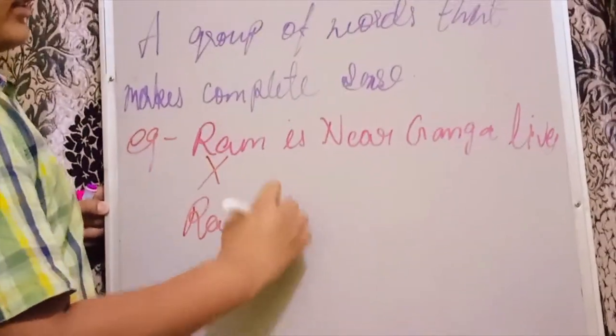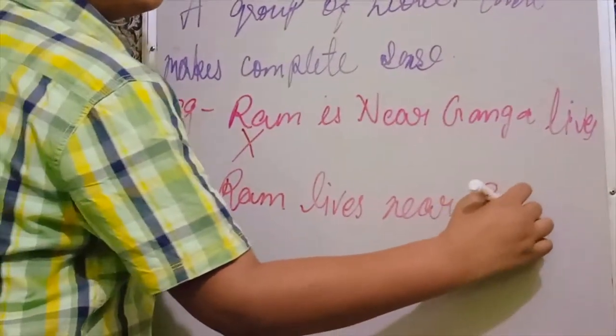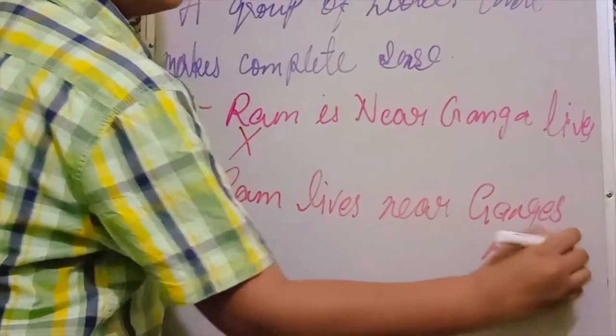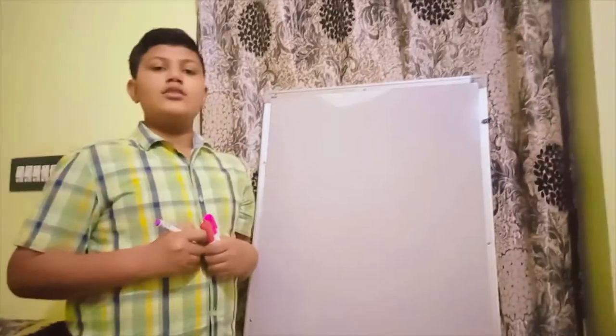The sentence will be: Ram lives near Ganga's river. So it is a good sentence that Ram lives near Ganga's river.